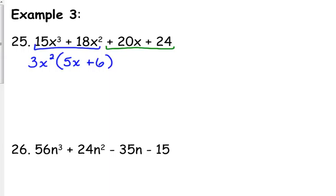Let's look at the second pair. Between 20x and 24, what is the largest number that will go into those? 4. And when we take out a 4, they don't both have a variable, so the number's the only thing there. When we take out the 4, we're left with 5x + 6.